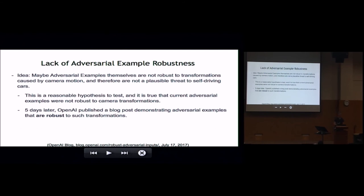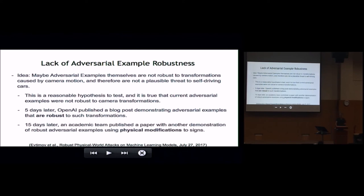Unfortunately, that doesn't save us. Five days later, OpenAI published a demonstration of a pretty simple modification to adversarial example generation that makes examples robust to camera transformations. And then a few days after that, Dawn Song's group published a paper showing you could generate robust adversarial perturbations, print them out as stickers, literally stick them to stop signs, and those were quite robust to camera transformations as well. So we're not out of the woods yet.